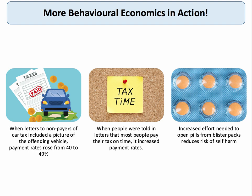People getting tickets for parking offences, non-payment of car tax, and speeding often receive a standard penalty notice saying they have 28 days to pay or face court, but many still choose not to pay. Sending a letter including a picture of the offending vehicle lifted payment rates by nearly 10%. It also sometimes includes a picture of who's in the car with you, which can be embarrassing. For non-payment of tax, telling people in the letter that most people pay their tax on time increased payment rates by a non-trivial amount. However, for the highest income people that letter can actually reduce payment rates — better to send those groups a letter explaining exactly how their tax revenues are spent.